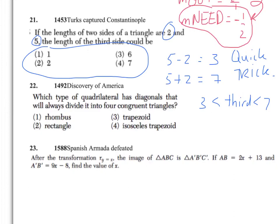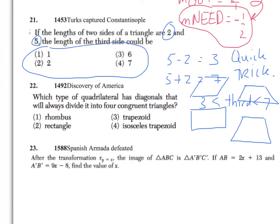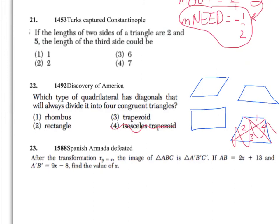Moving ahead on question 22 — which of the following shapes has diagonals that will create four congruent triangles? Your best bet is to draw the four shapes: draw a rhombus, a rectangle, a trapezoid, and an isosceles trapezoid. Then draw the diagonals in and ask: does this configuration create four triangles that are all congruent to each other? For an isosceles trapezoid, no. Draw the diagonals and you can see the answer that way.